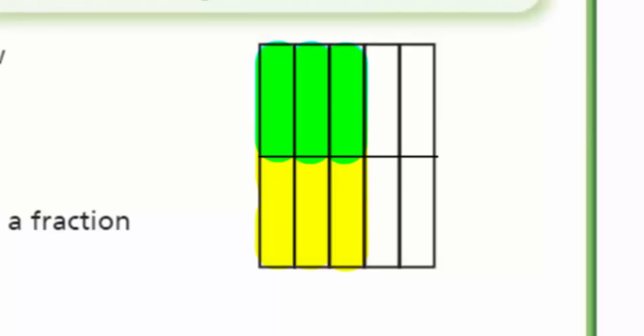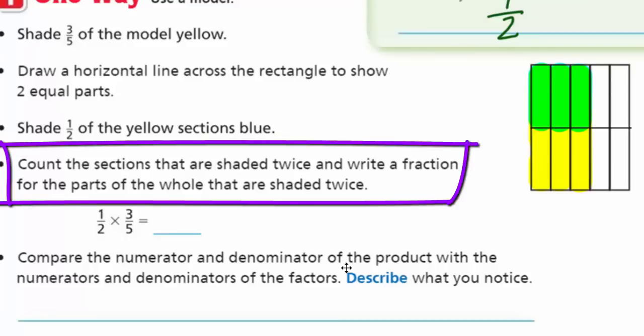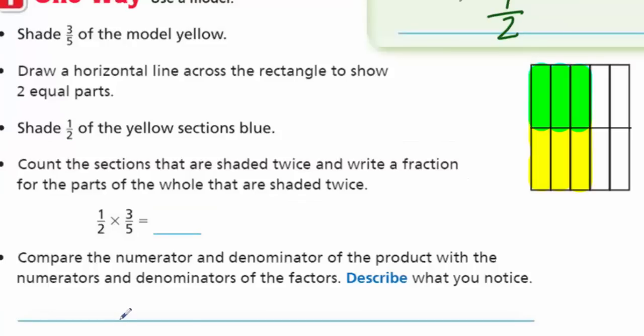Mr. Warwick turns yellow to green! That, my friends, is called — well, it's just called green. It's the color green. So we know yellow and blue makes green. It just works out really nicely. Now count the sections that are shaded twice — we do have a section shaded twice, but we can say shaded green. Write a fraction for the parts of the whole shaded twice or green. I see three sections, and I see a total of ten sections. So that would be three tenths!